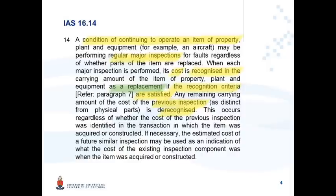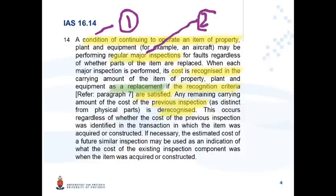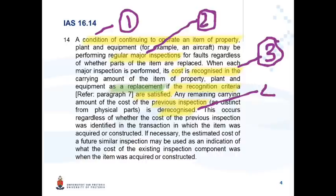The first thing to note is the type of cost we refer to in this example - a major inspection which is a condition of continuing to operate the PPE item. Without the inspection, the item cannot operate and there will be no future economic benefits. It refers to regular major inspections. You can capitalize this cost and recognize it as PPE, but to prevent overstatement you have to de-recognize the cost of the previous inspection.